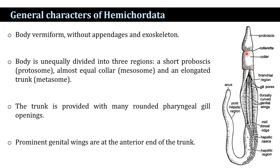The second region is the collar region, known as the mesosome. The third is the elongated trunk region, known as the metasome. The trunk region is provided with many rounded pharyngeal gill openings and prominent genital wings located at the anterior end of the trunk region.